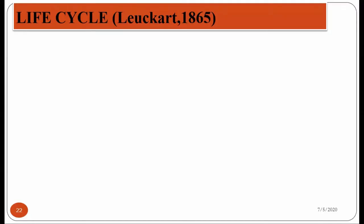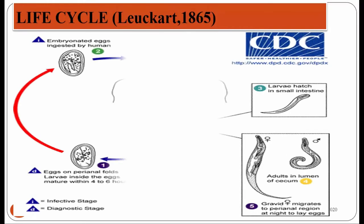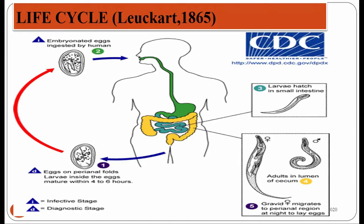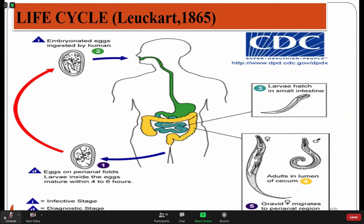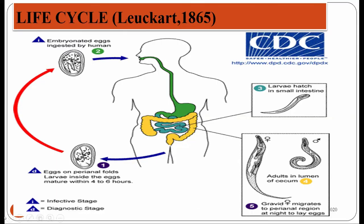Now we will discuss the life cycle of Enterobius vermicularis. The detailed life cycle was described by a scientist named Leuckart in the year 1865. Infection by Enterobius vermicularis is called enterobiasis, and enterobiasis is one of the ancient diseases. A person gets infected when a healthy person consumes food or drinks contaminated by the eggs of Enterobius vermicularis. The eggs must be embryonated to begin infection.